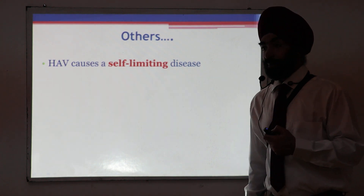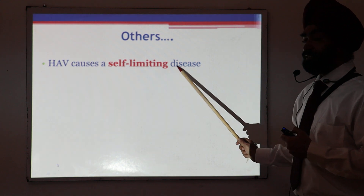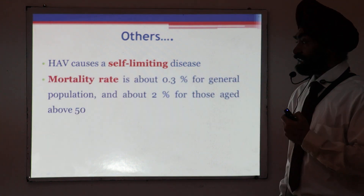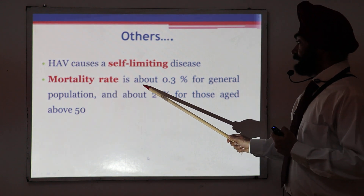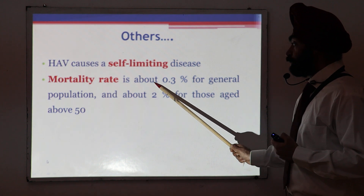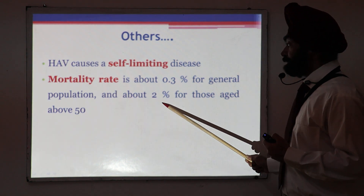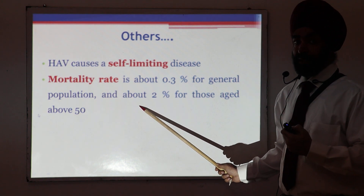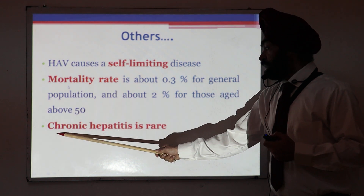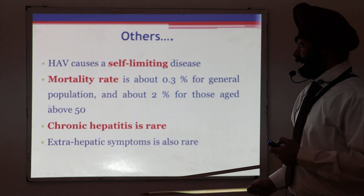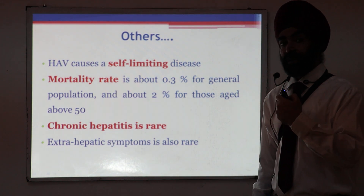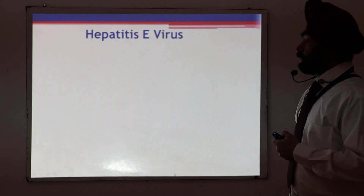Hepatitis A is self-limiting in nature — the disease will resolve by itself even without medication in most cases. Mortality is about 0.3% in the general population, but rises to approximately 2% if the patient is aged 50 or older. Importantly, there is only an acute phase in hepatitis A — chronic hepatitis is very rare — and extra-hepatic complications involving other organs are also very rare.